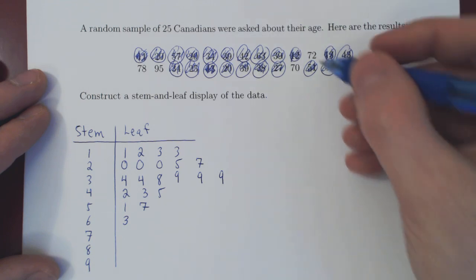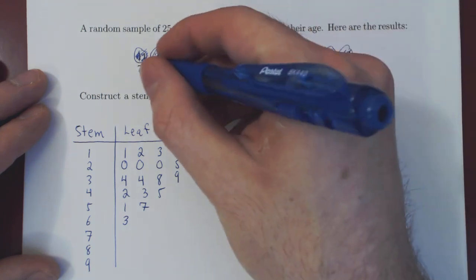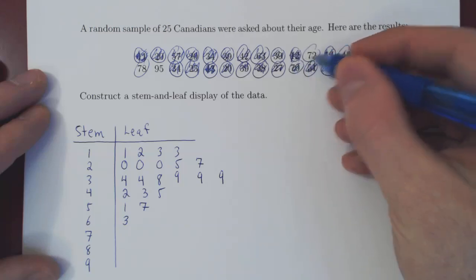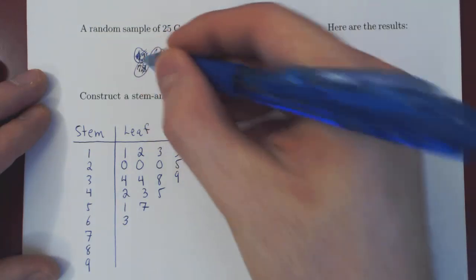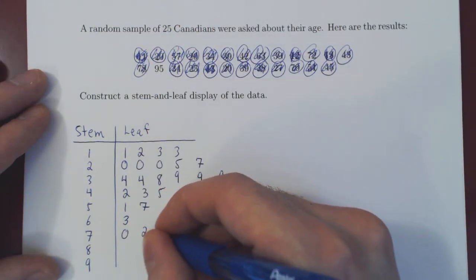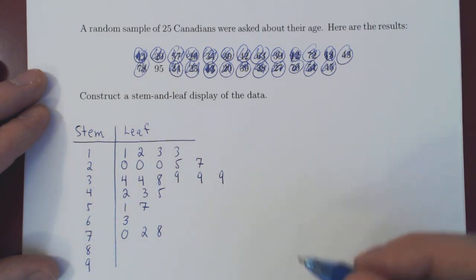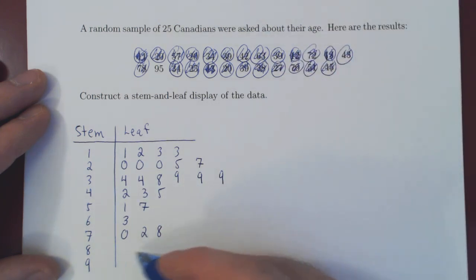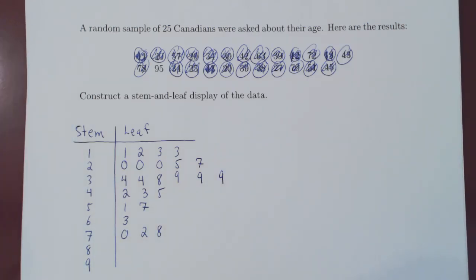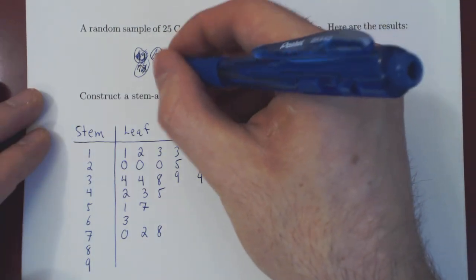People in their 70s, there were three of those: 72, 70, and 78. So we have 0, 2, and 8. People in their 80s, there was no one, so we leave an empty row. And people in their 90s, it was only one: 95. 5.